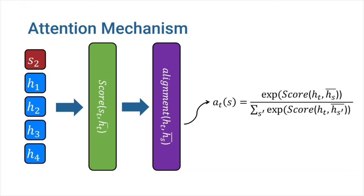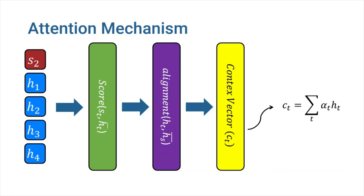Now we have the attention weights we were searching for. Given the alignment vector as weights, the context vector is computed as the weighted average over all the source hidden states. Now we can pass the context vector into the decoder so that our decoder can access the entire input sequence and also focus on the relevant positions in the input sequence.